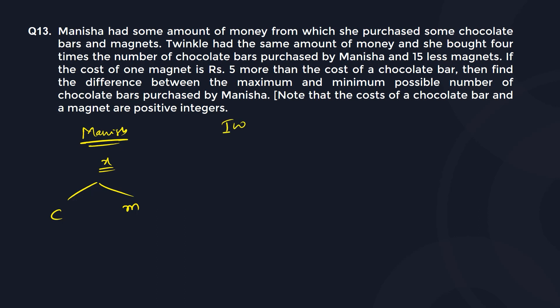There is a lady by name Twinkle. She had the same amount of money x, but she bought 4 times the number of chocolate bars — so 4c — but obviously she is spending more money there, so she is getting 15 less magnets, that is m minus 15.